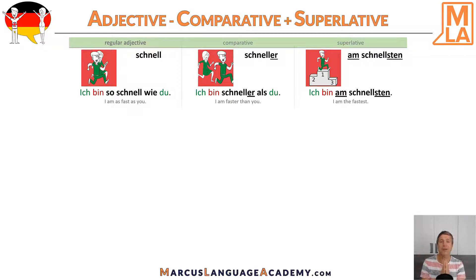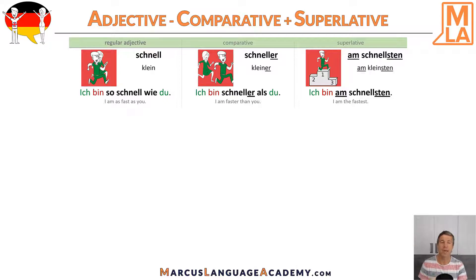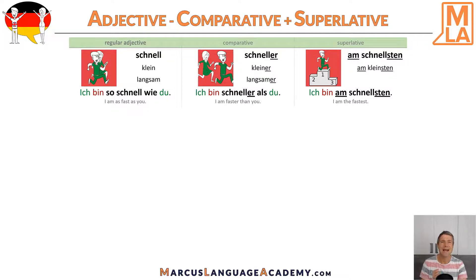Many other regular adjectives do the same thing. For example, 'klein', which means small or little: 'kleiner' — smaller, and 'am kleinsten' — the smallest. Here another example: 'langsam' — slow; 'langsamer' — slower; and 'am langsamsten' — the slowest.